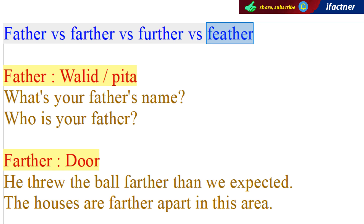Doostoon aaj ka pehla word hai father. Father pita ko kehtay hain, walid ko kehtay hain, baap ko kehtay hain. Iske alawa father jo hai, jo Christian religion hai, us mein jo pastor hootay hai, paadri hootay hai, usko bhi father kaha jata hai.